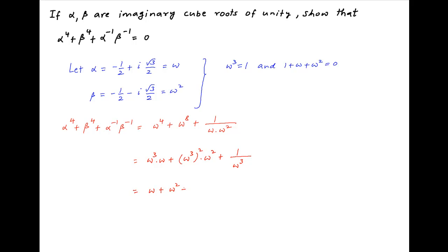Since omega cube equals 1, this equals omega plus omega square plus 1, which equals 0.